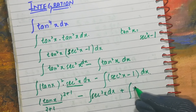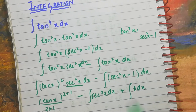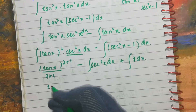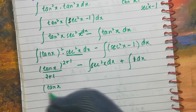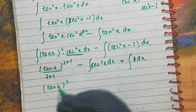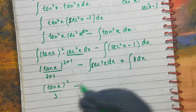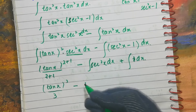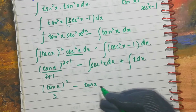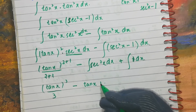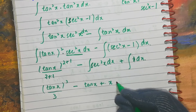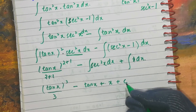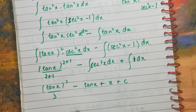The minus signs simplify: integration of sec²x is tan x, and integration of 1 is x. So the final answer is tan³x/3 − tan x + x + C.